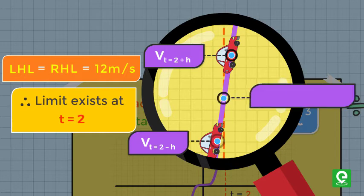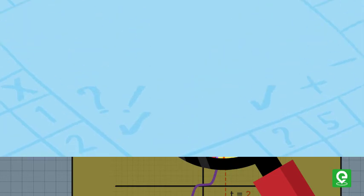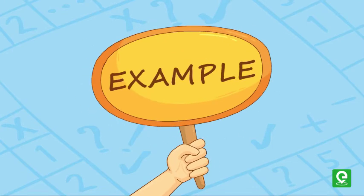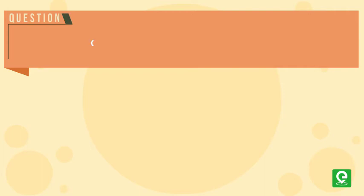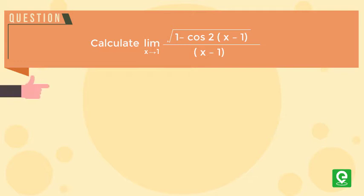Let's take an example to solidify our concept of limits. Question: Calculate limit of √[1 - cos(2(x - 1))] / (x - 1) as x approaches 1. The options are...